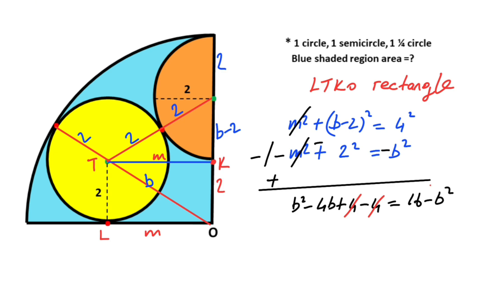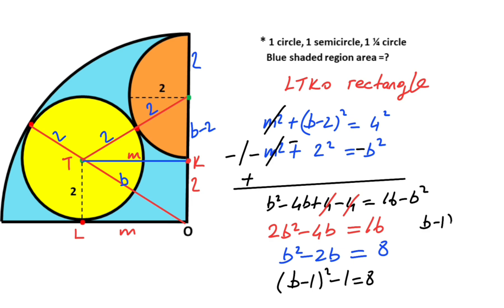So if we divide both sides of the equation by two, we get b squared minus 4b equals 8. Therefore, if you convert this expression to a perfect square, so (b minus 1) whole squared minus 1 equals 8. That means (b minus 1) whole squared equals 9.